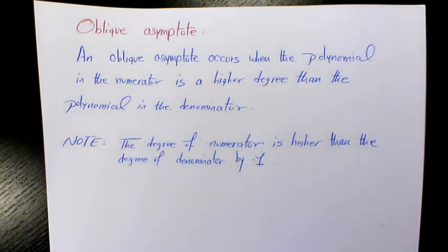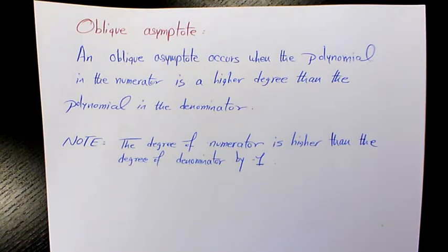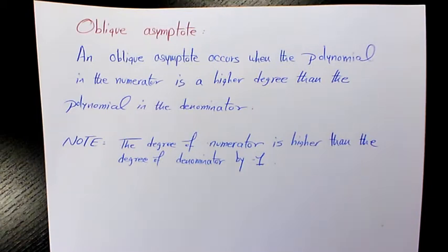Welcome to another video. In this video I want to talk about oblique asymptotes. We already saw horizontal asymptotes and vertical asymptotes with many examples, but now I want to show you some examples regarding finding oblique asymptotes. The oblique asymptote occurs when the polynomial in the numerator is a higher degree than the polynomial in the denominator, and the degree of the numerator is higher than the degree of the denominator by one.